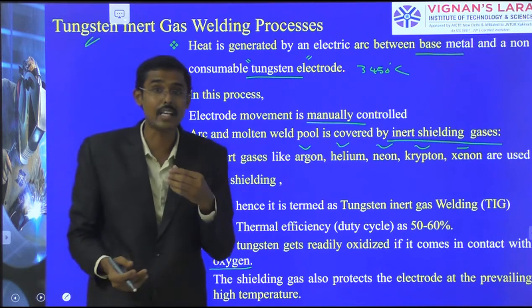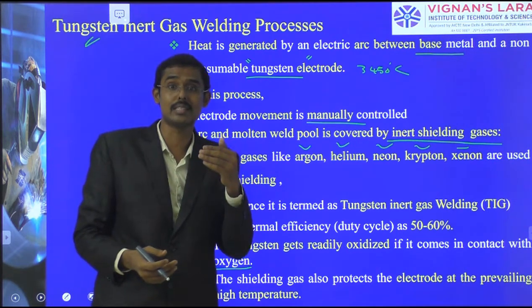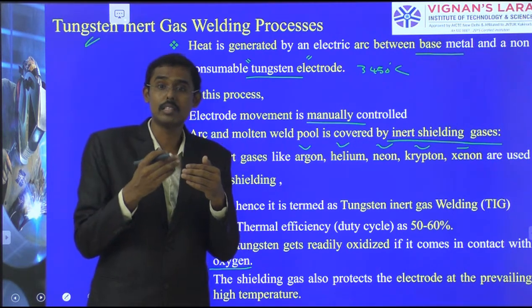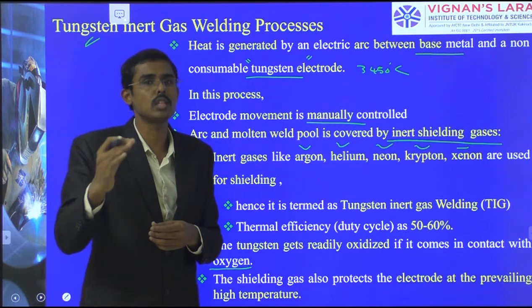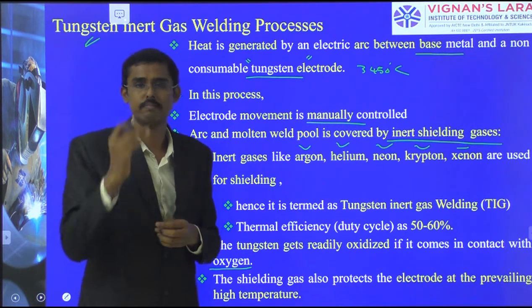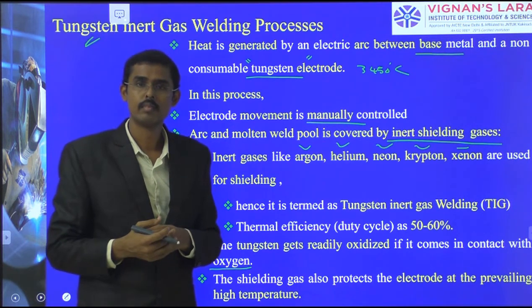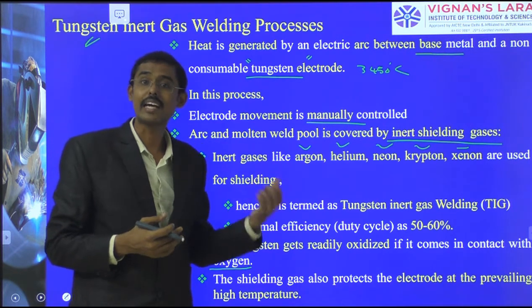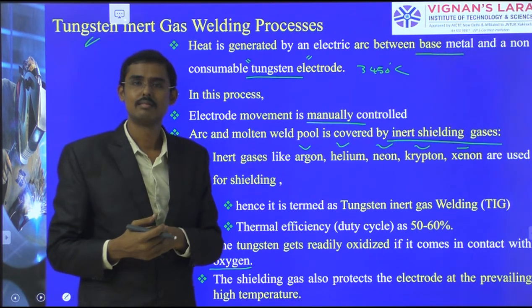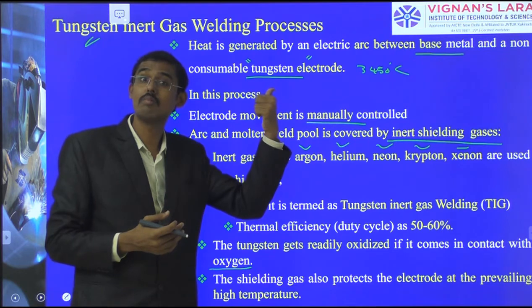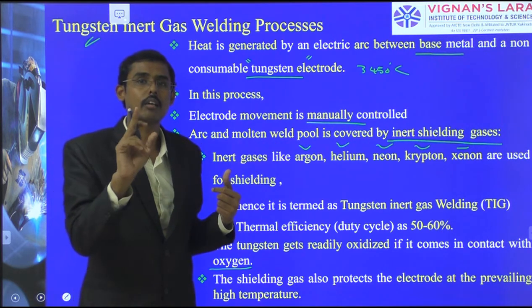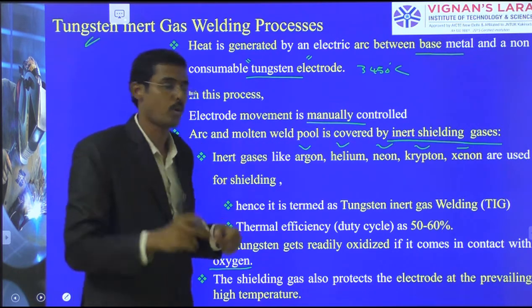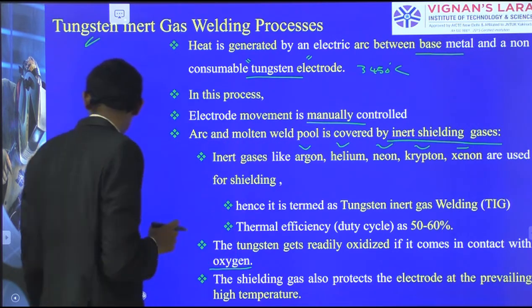Active gases cause reactions and are therefore not used for aluminium or tungsten in TIG welding. When active gases are used in MIG welding, the process converts into the MAG (metal active gas) process, which we have already discussed.